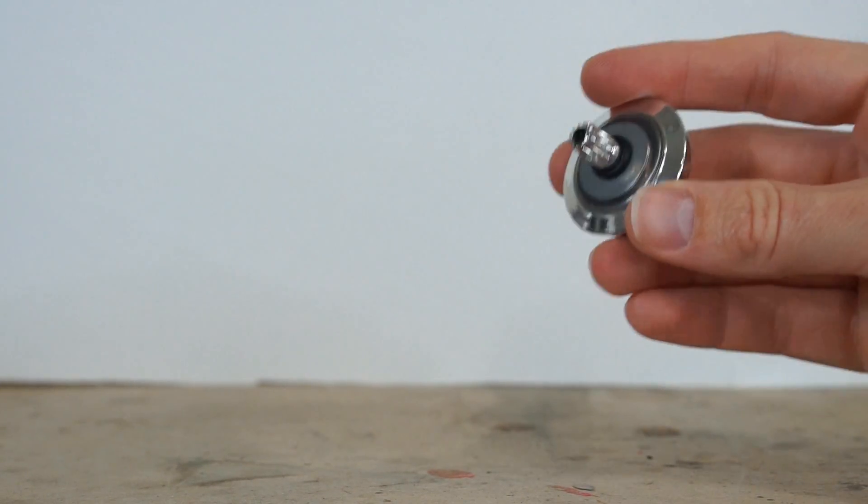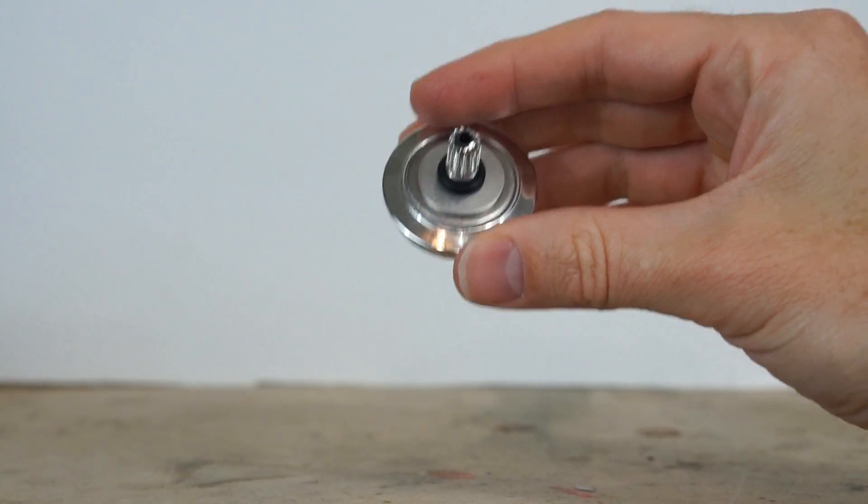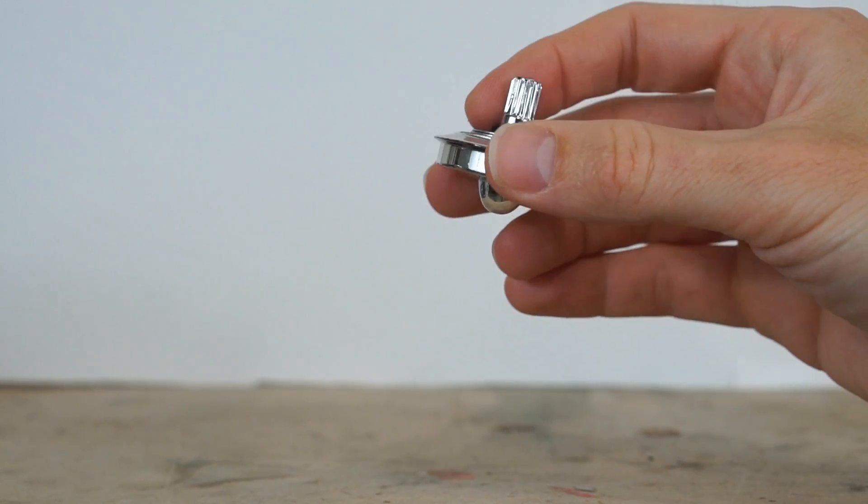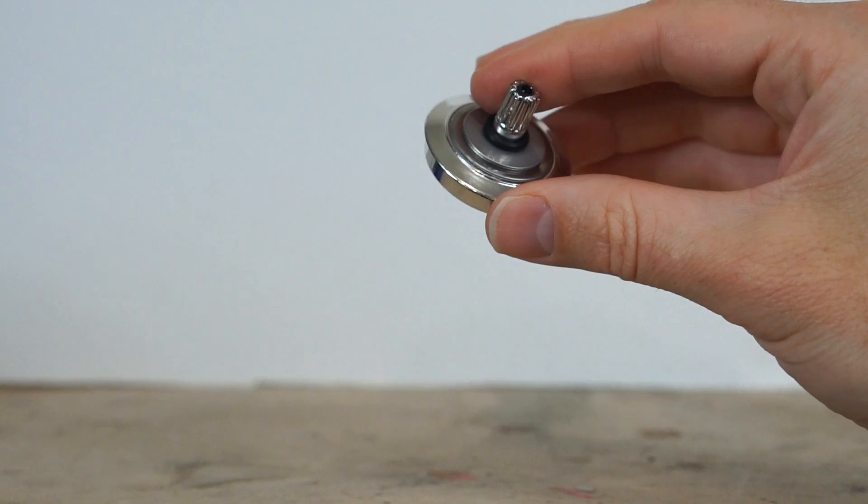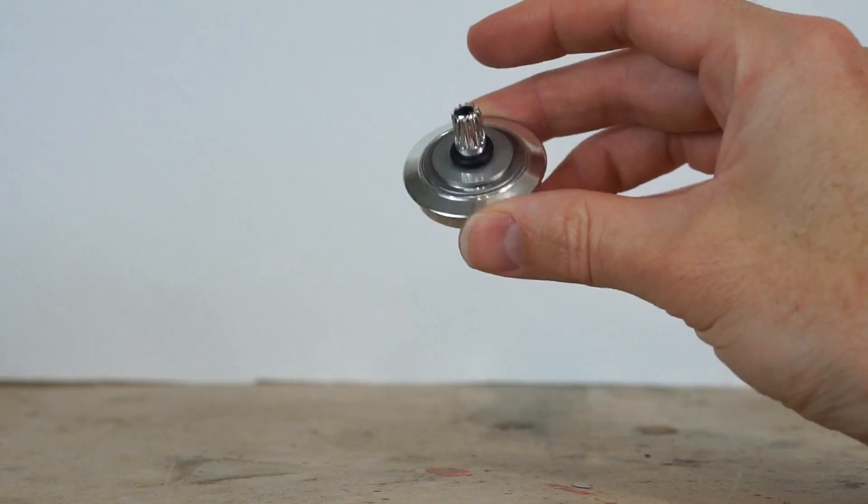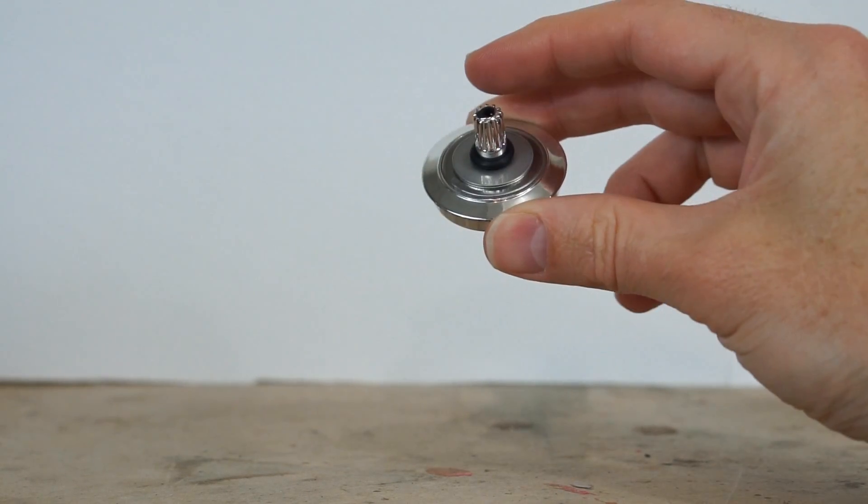So you could think that this will spin forever. One of the best examples of an object spinning in space is the earth. The earth has been spinning for a long time and it's not going to stop anytime soon. So the next question you may ask is, can anything keep spinning indefinitely forever even in space?